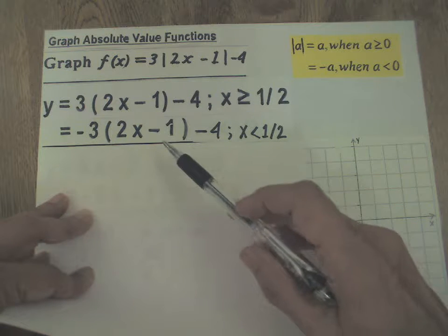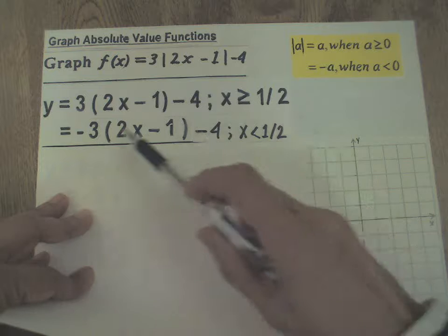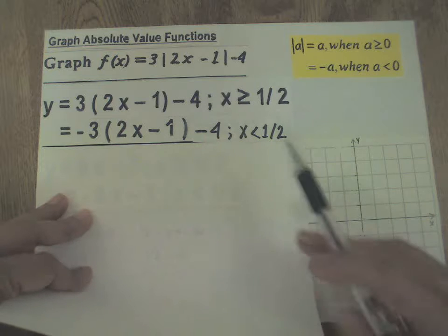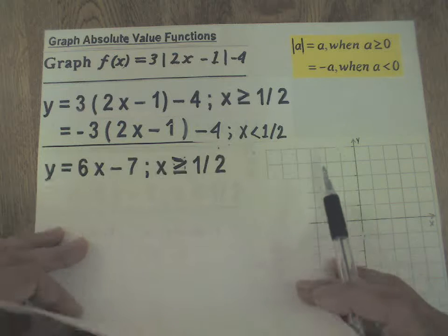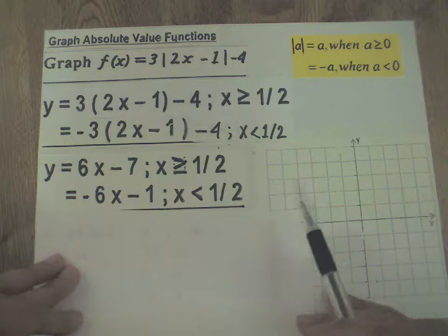In the next step, you need to keep on simplifying these two lines. So use the distributive property to open out the parenthesis, and this is what you get.